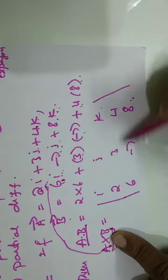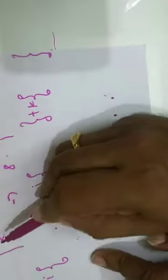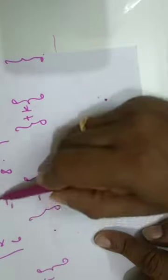Now I have to expand this determinant. A cross b equals the determinant with first row i, j, k; second row 2, 3, 4; third row 6, -7, 8. How do we expand this determinant?